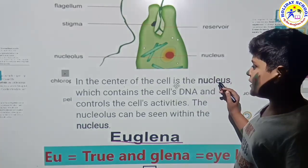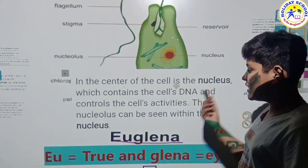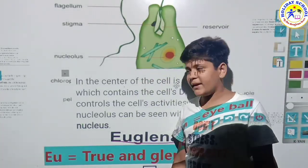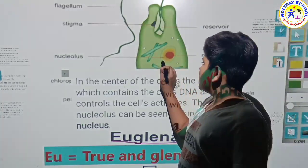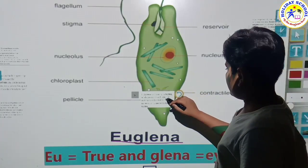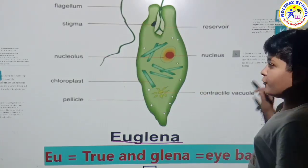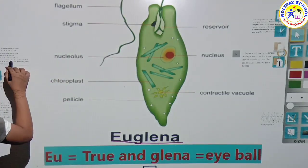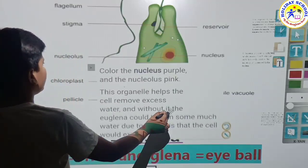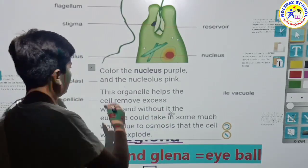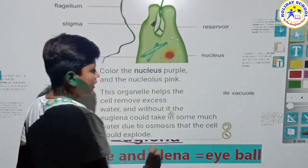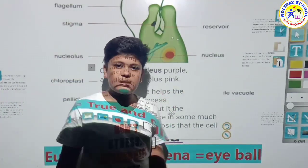It is written that the nucleus contains the cell's DNA, and you can see the nucleolus nearby the nucleus. Color the nucleus purple and the nucleolus pink. The colours here are different but basically those are the colours used.